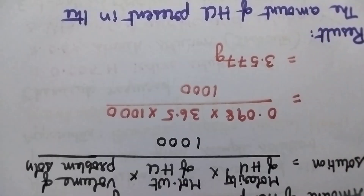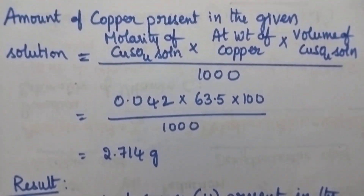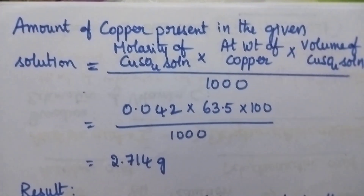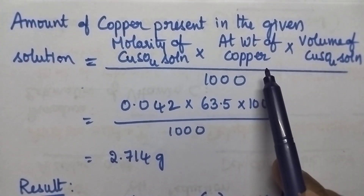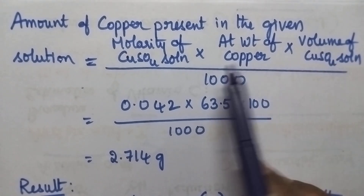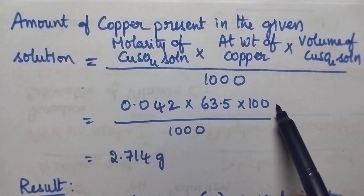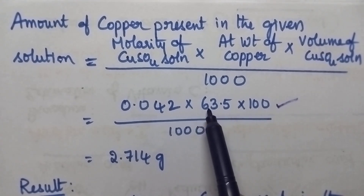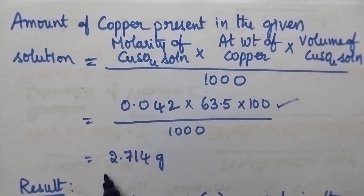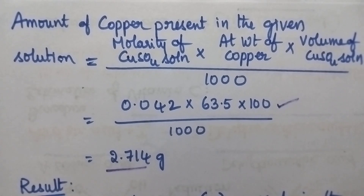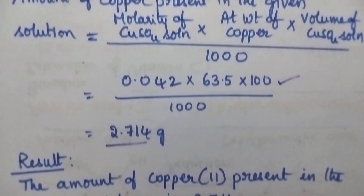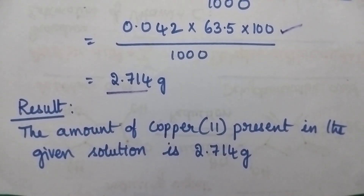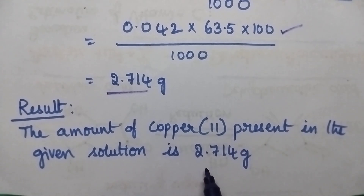Finally, the amount of copper is estimated using the formula: molarity of copper sulfate solution × atomic weight of copper × volume of copper sulfate solution / 1000. The volume of copper sulfate solution is 100 ml and the atomic weight of copper is 63.5. On substituting, the amount is obtained as 2.714 grams. The result of the experiment is that the amount of copper present in the given 100 ml of solution is 2.714 grams.